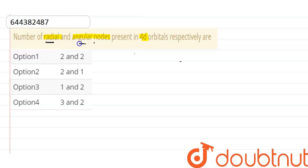find out number of radial and angular nodes in 4d orbital. To calculate radial nodes, the formula is n minus l minus 1, where n is the principal quantum number and l is the azimuthal quantum number.